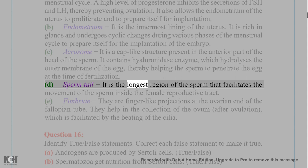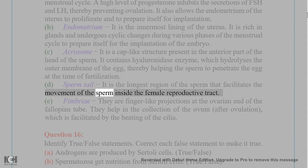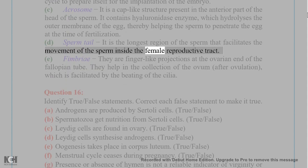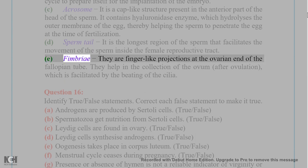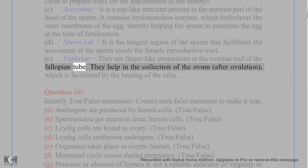D. Sperm tail: It is the longest region of the sperm that facilitates the movement of the sperm inside the female reproductive tract. E. Fimbria: They are finger-like projections at the ovarian end of the fallopian tube. They help in the collection of the ovum after ovulation, which is facilitated by the beating of the cilia.